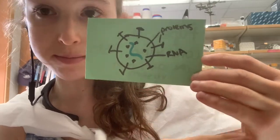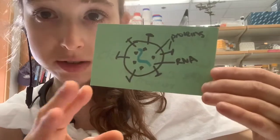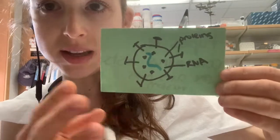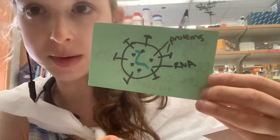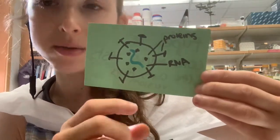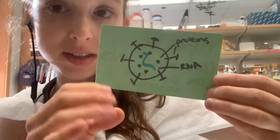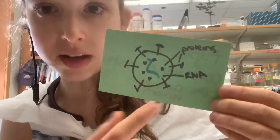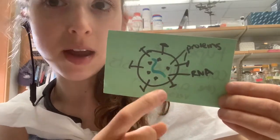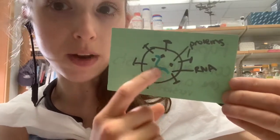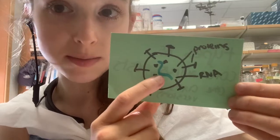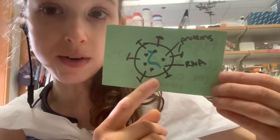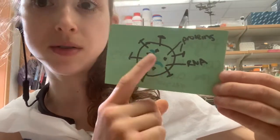There's also the nucleocapsid protein that comes into play with a lot of the antigen tests. The nucleocapsid protein surrounds the RNA and is a really abundant protein. So if this virus gets into a person and they get infected — they can't block it from getting in — the virus is going to replicate and make more copies of itself, so you end up with more viral RNA and more viral proteins.